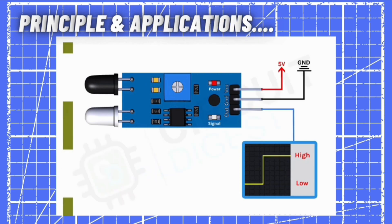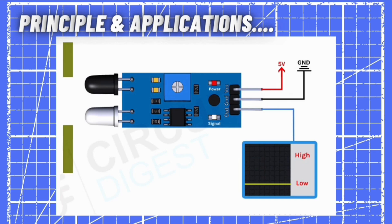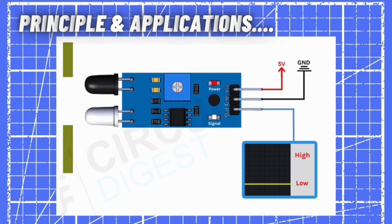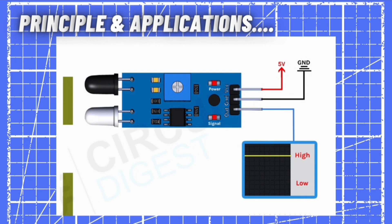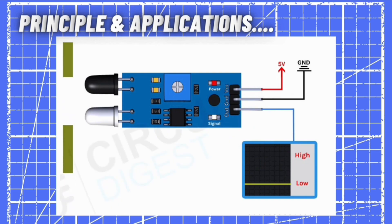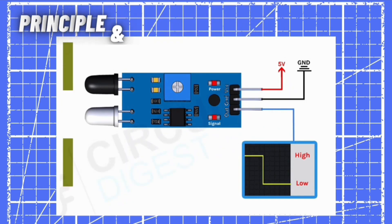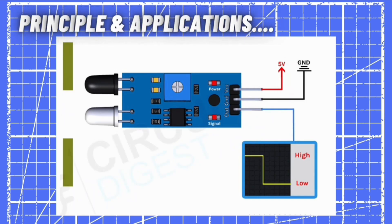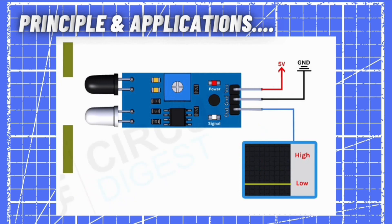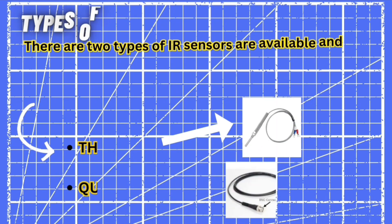Now let's take a look at the simulation process of an IR sensor to get a complete idea of how it works. When an IR sensor detects an object, the signal LED glows red on the IR sensor board, and there is a voltage change at the output terminal — it changes from low voltage to high, and then high to low simultaneously, as the IR sensor is sensed or unsensed by an object. This is the working principle of an IR sensor.